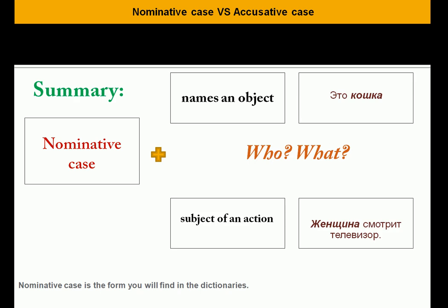So let's summarize this. First, the nominative case names an object — 'this is a cat' — это кошка. And it also indicates the subject of an action — женщина смотрит телевизор — the woman is watching TV.